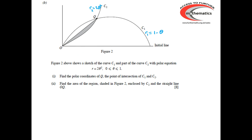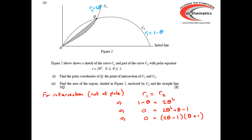A second curve C₂ is introduced: r = 2θ² for θ between 0 and 1. To find the non-pole intersection of C₁ and C₂, we set 1 − θ = 2θ², giving the quadratic 2θ² + θ − 1 = 0, which factorises to give θ = ½ or θ = −1. Since θ is between 0 and 1, θ = ½, and substituting gives r = ½. So point Q has polar coordinates (r = ½, θ = ½).